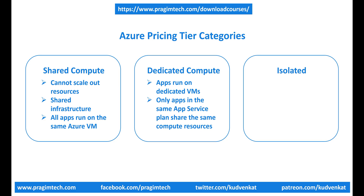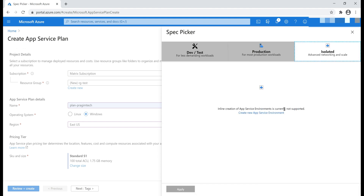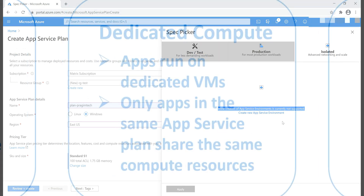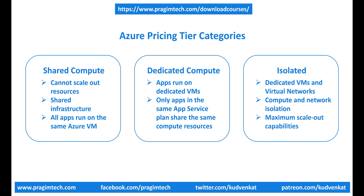Finally, we have the isolated category. Let me click on the isolated workload. Notice the message: inline creation of App Service Environment is currently not supported. We'll discuss App Service Environment and its significance in upcoming videos. For now, just understand that with the isolated pricing tier category, you not only get dedicated virtual machines but also dedicated virtual networks. This means, on top of compute isolation, you also get network isolation through virtual networks, and it provides the maximum scale-out capabilities.